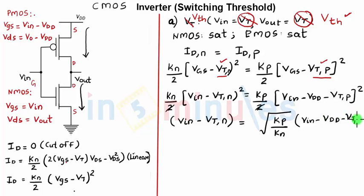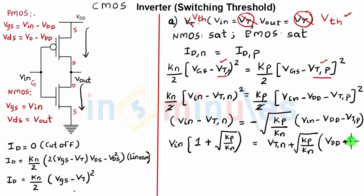Remember, when we take square root, we will get two roots out of which one will give you an incorrect value and other one will give you a correct value and that is nothing but with a negative sign. This is what after rearranging the terms and taking the square root is my expression. Now, let's write it further in terms of VIN. That is nothing but VIN 1 plus KP by KN equal to VTN plus KP by KN into VDD plus VTP.